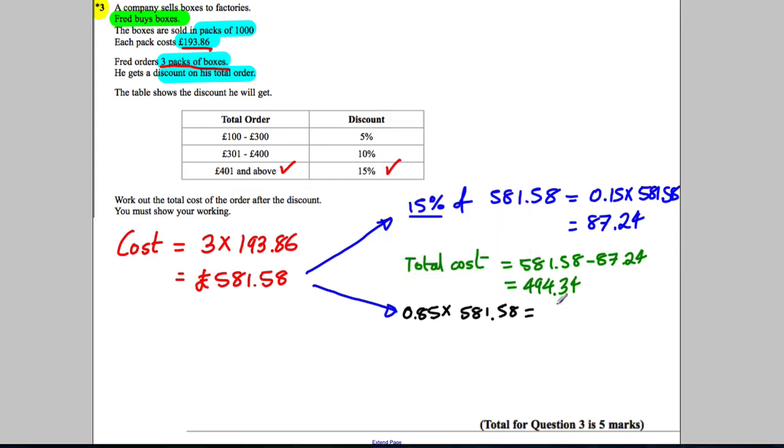So you get five marks, and we've shown the total cost. Now remember the two different ways: the first, even if you weren't sure how to work this out, the cost was three multiplied by £193.86, so you get marks for that. Then we have to work out 15%. One way of working out 15% is to multiply by 0.15, and then we get that number and we subtract it from the total.